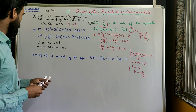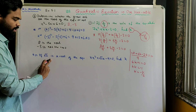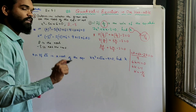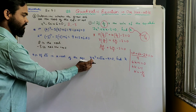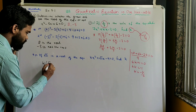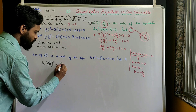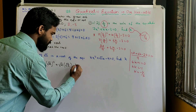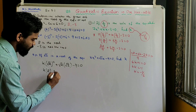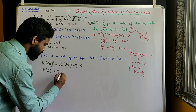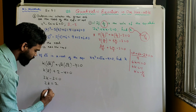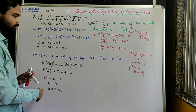Now look at Problem 4 part 1. If √2 is a root of kx² + √2x - 4 = 0, find k. Substitute x = √2: k(√2)² + √2×√2 - 4 = 0, which gives 2k + 2 - 4 = 0, so 2k = 2, meaning k = 1.